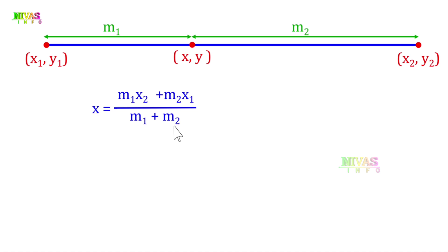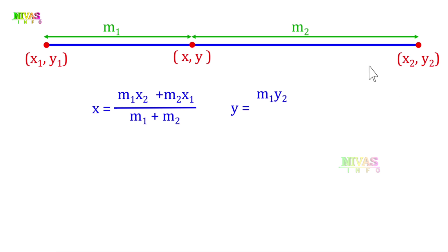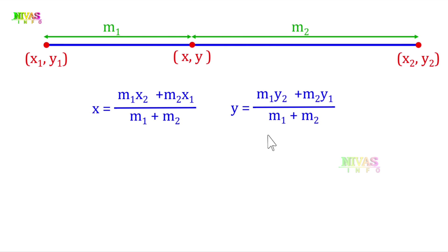Similarly, the y coordinate value is found using: y = (m1 × y2 + m2 × y1) / (m1 + m2). This is the way to find the y coordinate value.